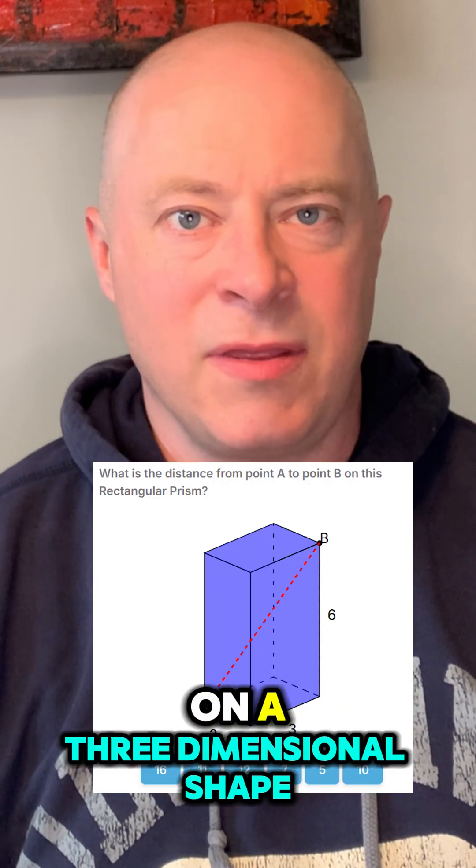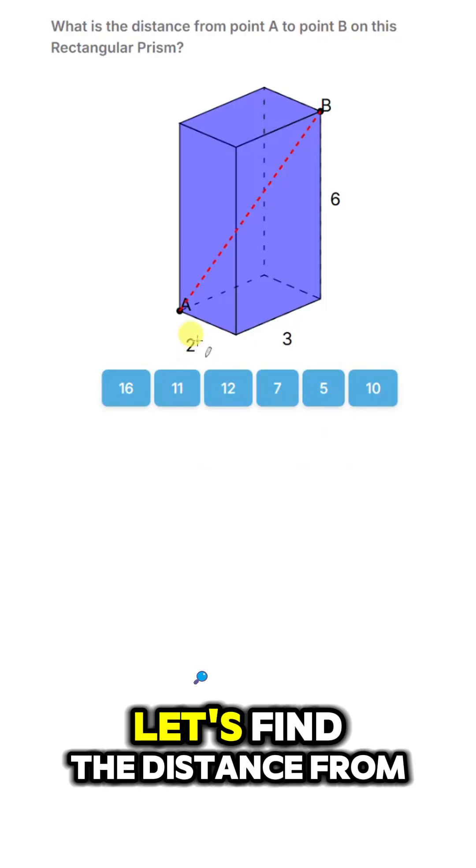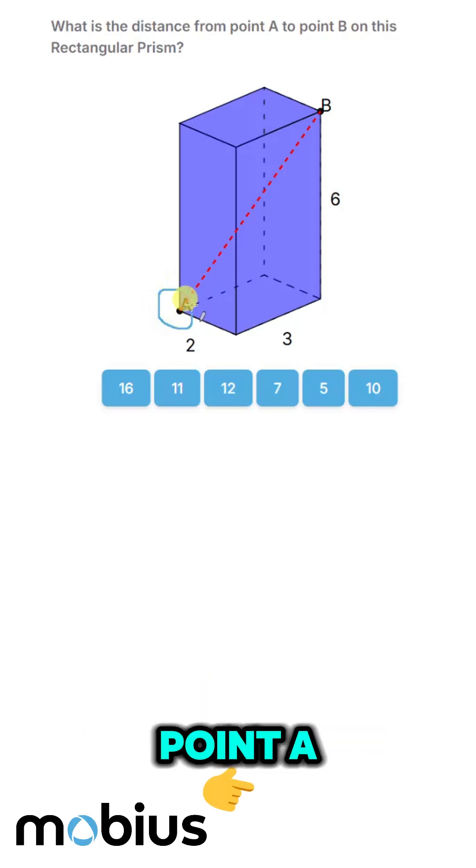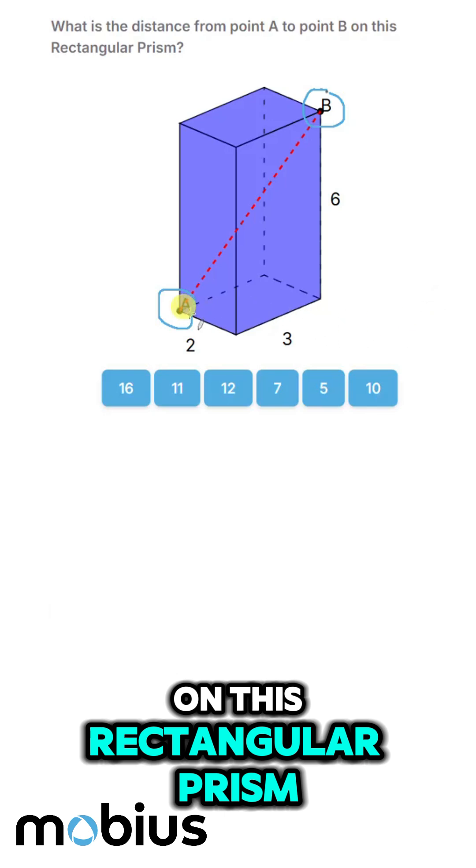Let's try using Pythagoras on a three-dimensional shape. Let's find the distance from point A all the way up to point B on this rectangular prism.